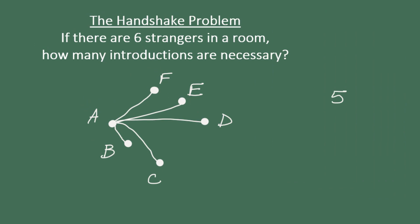Now, of course, when we count the introductions for person B, we no longer have to include A because person B has already met person A. So person B has to meet person C, D, E, and F. So that's four introductions for person B.